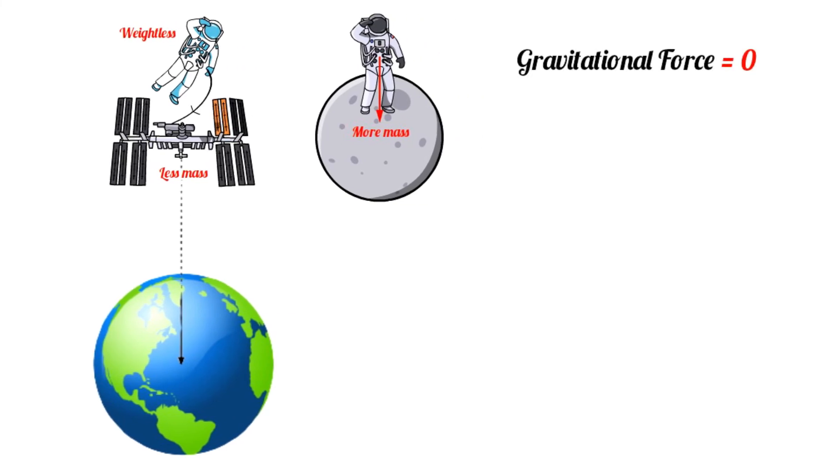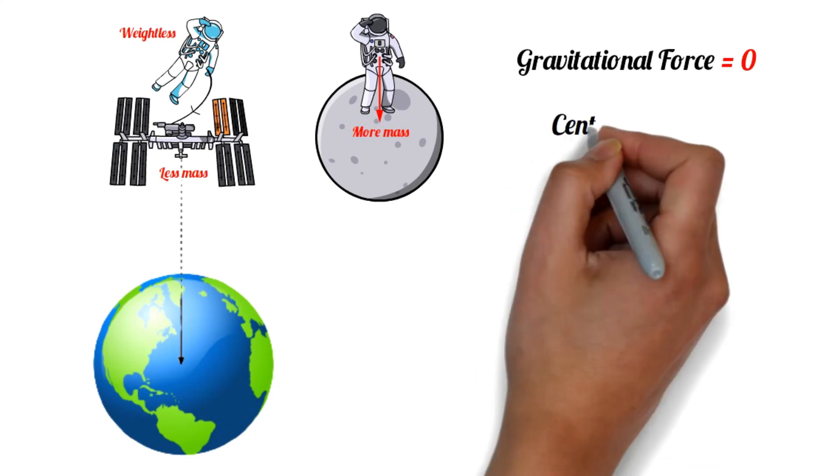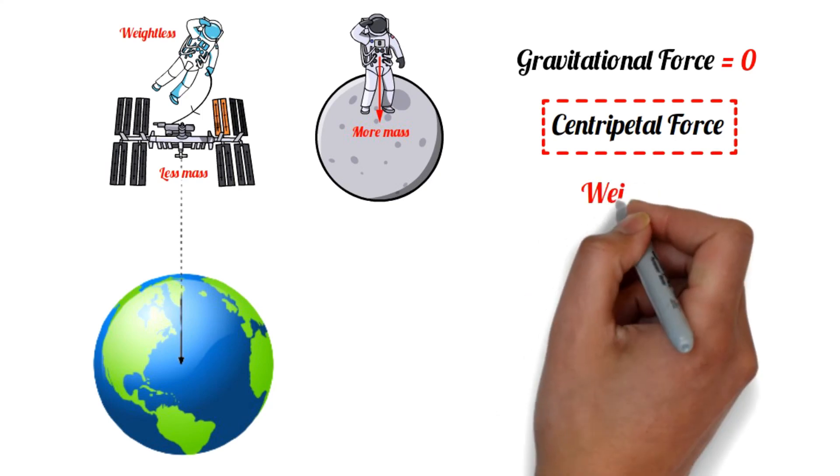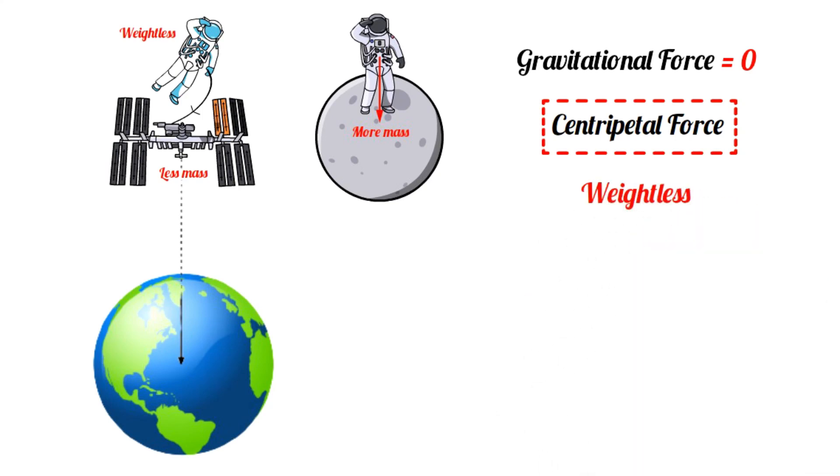If this force were zero, there would be no question of the satellite orbiting Earth, because then it would not be possible to provide the centripetal force necessary for orbiting. So an object being weightless means the reaction force acting on it is zero, but the gravitational force is not zero.